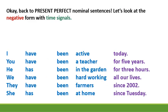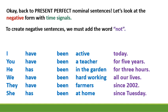Okay, back to present perfect nominal sentences. Let's look at the negative form with time signals. To create negative sentences, we must add the word not: have not been, has not been.